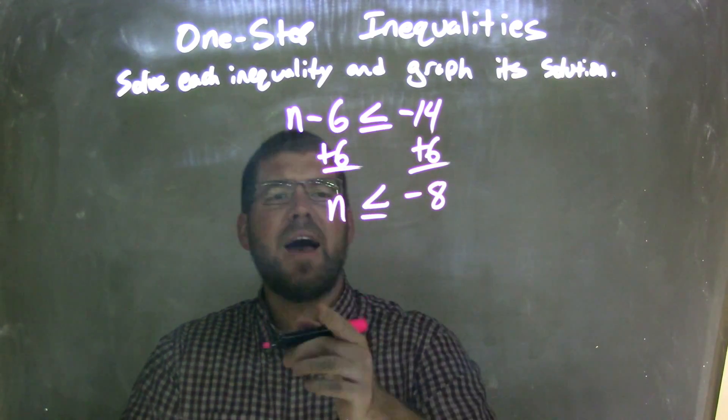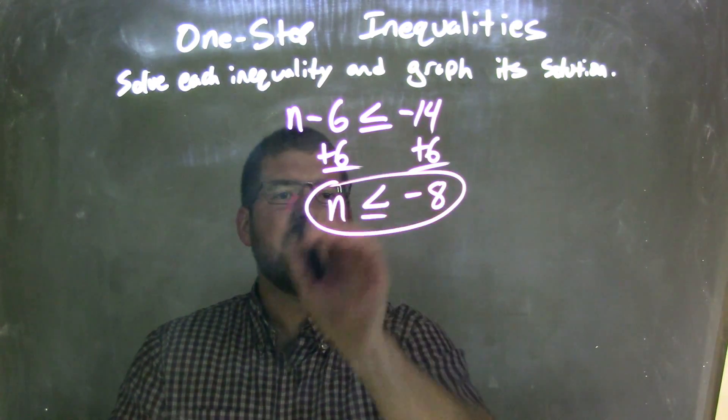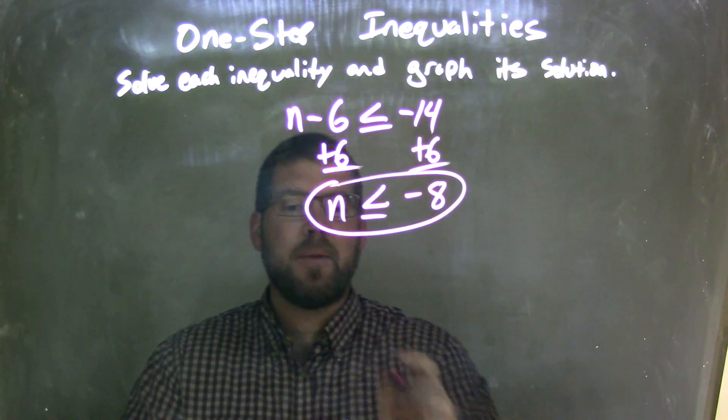Okay, so we have n is less than or equal to negative 8. Fantastic. We got a nice little answer there, so now we need to graph it.